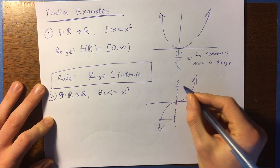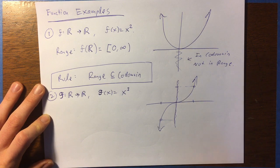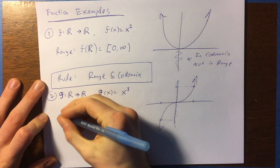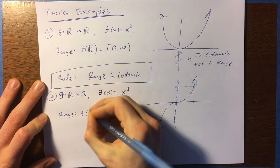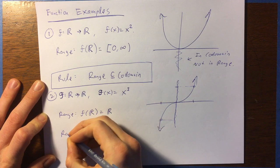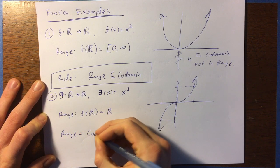No matter what real number, whether you pick a positive one or a negative one, you're going to be able to find some real number that's going to give that output, right? So in this case, the range, f of r, is the entire codomain r. So range actually equals codomain in this case.